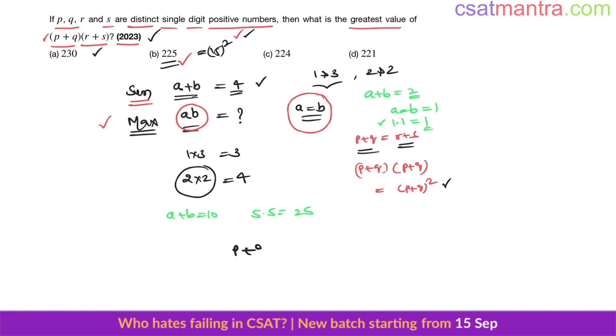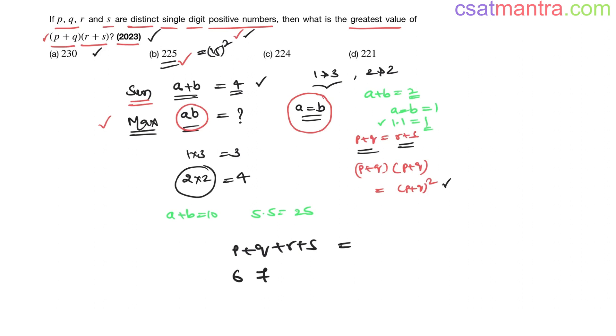For single digit positive numbers, p plus q plus r plus s, when will this sum be maximum? When this is 6, this is 7, this is 8, this is 9. Sum is 30 here. 6 plus 9 is 15, 7 plus 8 is 15, 15 plus 15 is 30. This is what I am saying: to make p plus q equal to r plus s, you can take p as 6, q as 9, r as 7, s as 8.